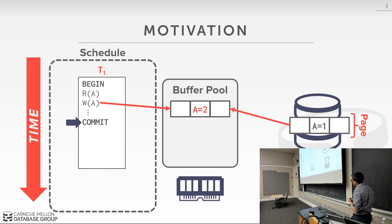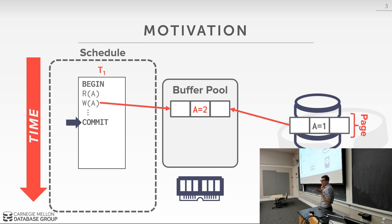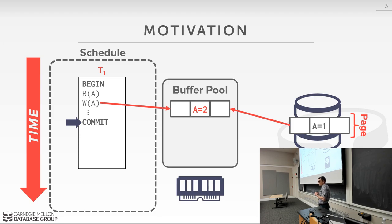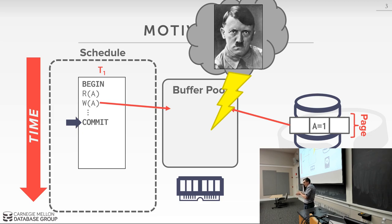Then our transaction is going to commit. Commit means the database system gives an acknowledgement to the outside world that our transaction is durable — meaning all the changes it made are persistent on disk. At this point, should we tell the outside world we've committed? No, because A2 is not yet on disk. What could happen is we lose all power and our write goes away. If we told the outside world the transaction committed and then we lose power, anyone coming back will say 'you told me this transaction committed, where is the change to A?' And we can't recover it.